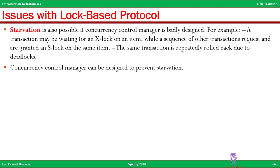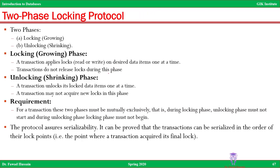The concurrency manager can be designed to prevent such starvation. To deal with these kinds of issues, we look at what is called the two-phase locking protocol, which we will discuss in the next lecture.